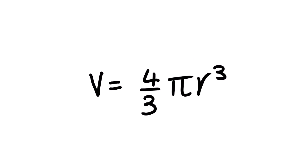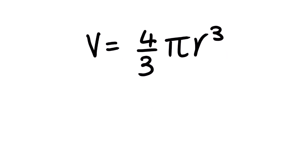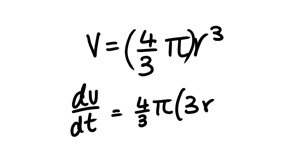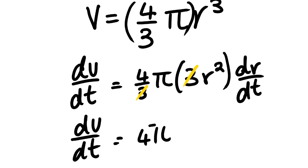The derivative of this with respect to t. The derivative of V is 1, multiplied by dV over dt. The constant out front stays, so we only focus on r cubed. The derivative of r cubed is 3r squared multiplied by dr over dt. Simplifying, this gets rid of the constant factor, and we are left with dV over dt equal to 4πr squared multiplied by dr over dt.